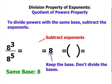In this very simple problem, I have 8 to the power of 3 divided by 8 to the power of 5. Notice that I have the same base, 8. When you use this property, you're going to simply subtract the exponents.